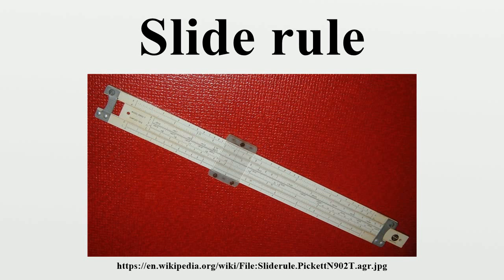Slide rules are not typically used for addition and subtraction, but it is nevertheless possible to do so using two different techniques. The first method requires converting the problem into one of division: for addition, the quotient of the two variables plus 1 times the divisor equals their sum; for subtraction, the quotient of the two variables minus 1 times the divisor equals their difference. This method is similar to the addition-subtraction technique used for high-speed electronic circuits with the logarithmic number system. The second method utilizes a sliding linear L scale available on some models, where addition and subtraction are performed by sliding the cursor left or right then returning the slide to 0 to read the result.